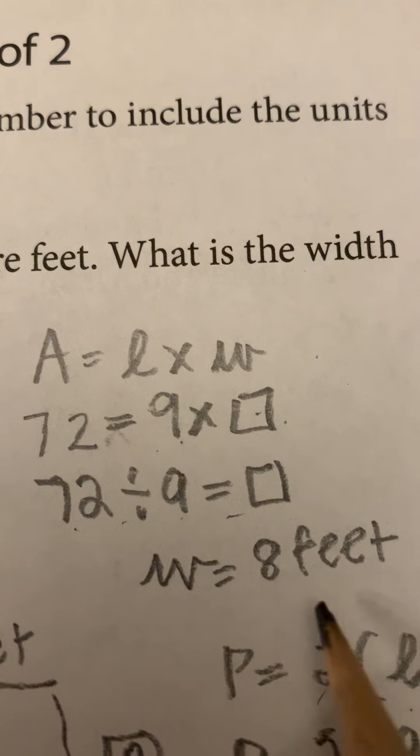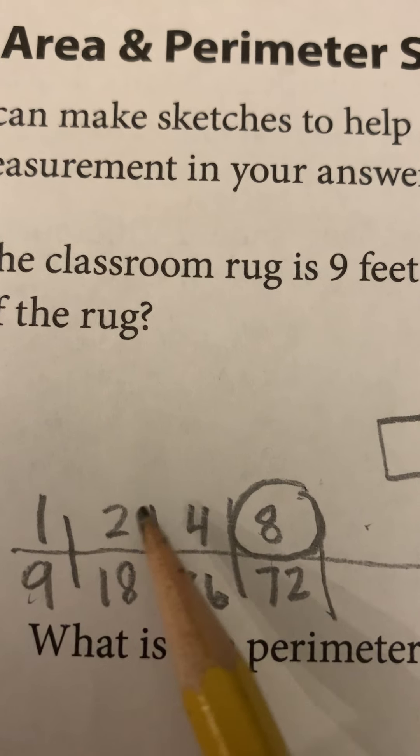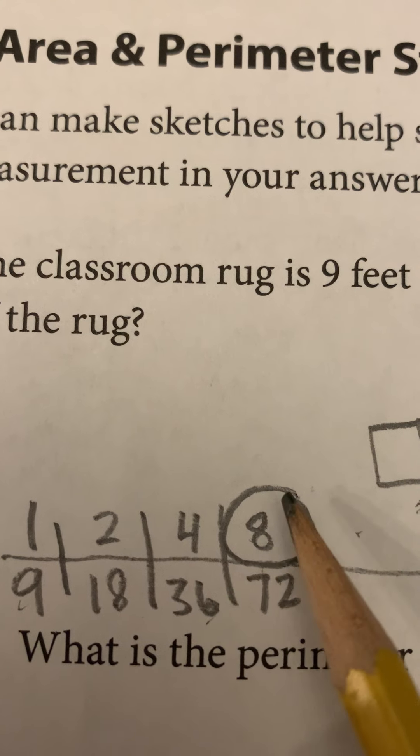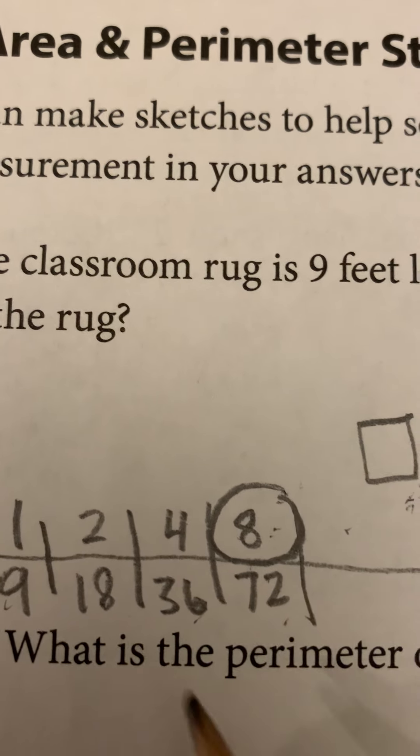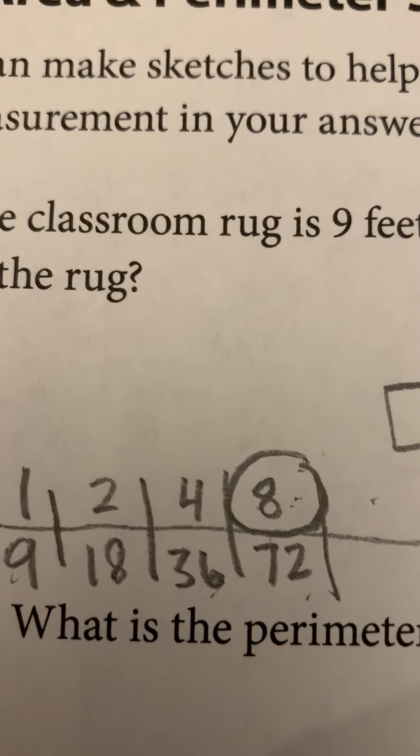I might know that right away is eight. The answer is eight feet. Or I might have counted by nines to get one nine, double it two nines, double it four nines, double it eight nines with 72 and my answer was eight. Either way you might have known it from your head or you used a ratio table to find that answer.